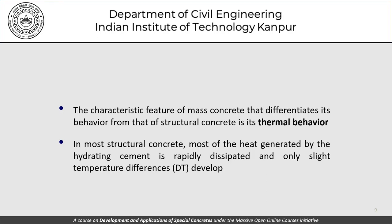What differentiates mass concrete from structural concrete is its thermal behavior. In most structural concrete, most heat generated by hydration is rapidly dissipated and only slight temperature differences develop — the temperature difference between the core (Tc) and the surface (Ts) remains small. But in mass concrete, this Tc minus Ts difference is significant and needs to be consciously managed.